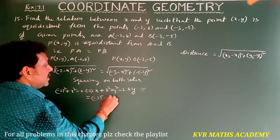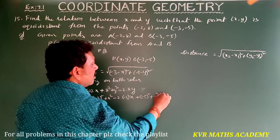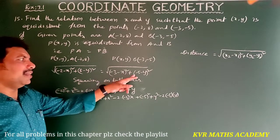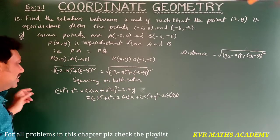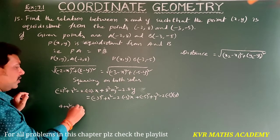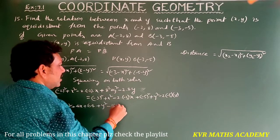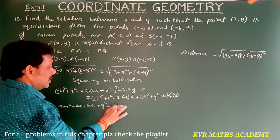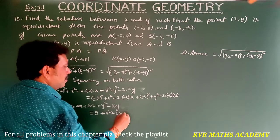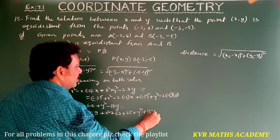The right side expands to: (-3)² plus x² minus 2(-3)x plus (-5)² plus y² minus 2(-5)y. Simplifying the left side: 4 plus x² plus 4x plus 64 plus y² minus 16y. And the right side: 9 plus x² plus 6x plus 25 plus y² plus 10y.